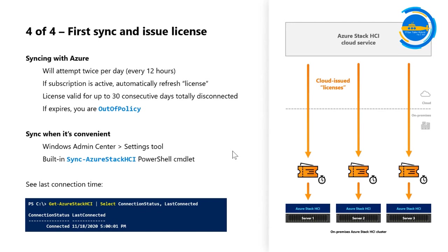When it successfully syncs, it also checks if the subscription is active — meaning your billing is current. Then we automatically refresh these cloud-issued licenses and push them to each of the nodes. These licenses allow Azure Stack HCI to fully function and indicate that this is a completely legitimate instance of Azure Stack HCI OS. These cloud-issued licenses expire after 30 days, but every 12 hours they are automatically renewed. It syncs every 12 hours, renews every 12 hours — across all nodes. If one new node joins, a new license comes in; if you remove a node, the license is removed. Everything is invisible to the user, all in the background.